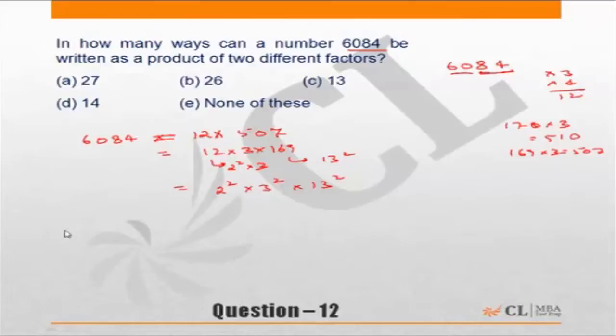So before I write down in how many ways can it be written as the product of two factors, I will need to find the number of factors. So the number of factors of 6084 will be the power plus 1 into power plus 1 into power plus 1. So 2 plus 1, 3 into 3 into 3, which is 27.